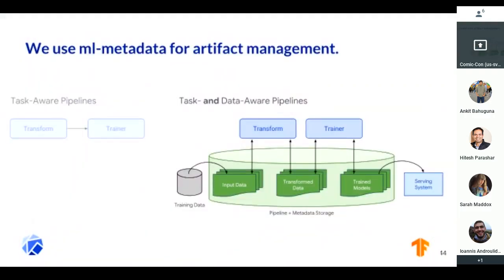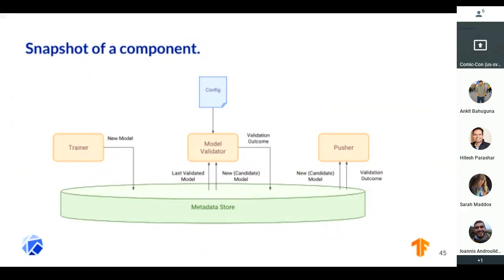We use ML metadata for metadata and for artifact management. We don't just manage tasks — we also manage data. We have the concept of data generated from the pipeline and data consumed by the pipeline. An example is Model Validator: not only are we using the current model trained out of Trainer, but we're going back to ML metadata and saying 'get me the last model' — let's do an A/B test of these two models before we decide whether to push it. Obvious use cases include warm starting with a trainer, where you want to retrieve the previous model.